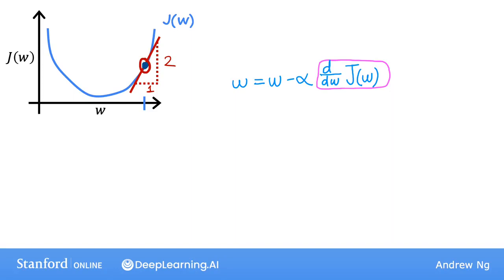And when the tangent line is pointing up and to the right, the slope is positive, which means that this derivative is a positive number, so it's greater than 0. And so the updated w is going to be w minus the learning rate times some positive number.